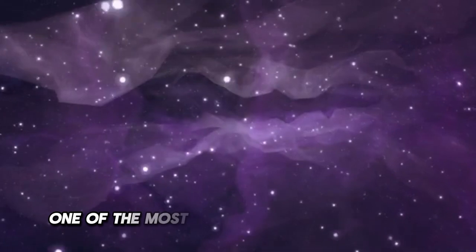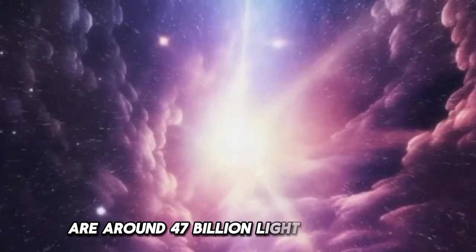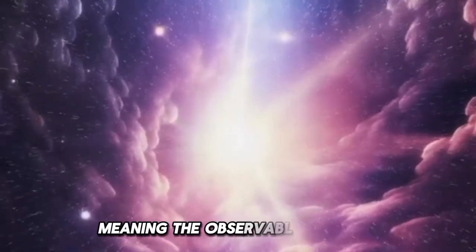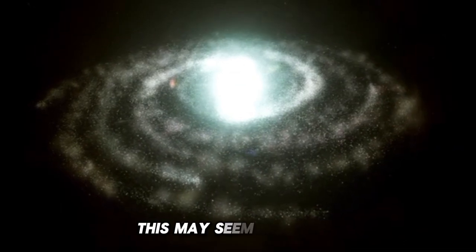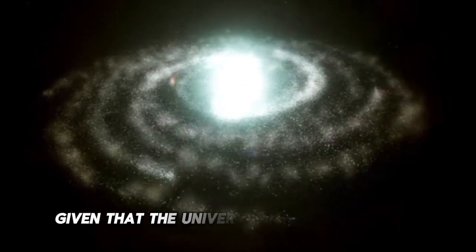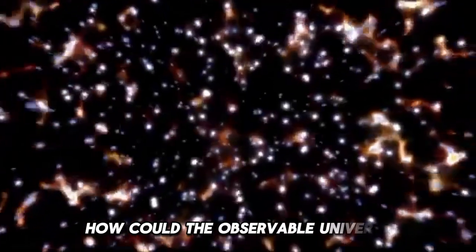One of the most astonishing aspects of the universe is its size. The most distant objects we can observe are around 47 billion light-years away, meaning the observable universe is about 94 billion light-years across. This may seem illogical given that the universe is only 13.8 billion years old. How could the observable universe be larger than the time it would take light to travel across the entire age of the universe?